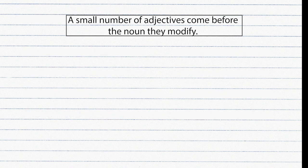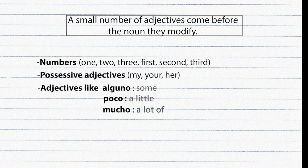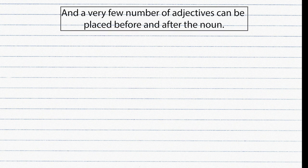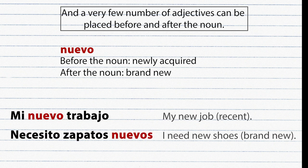Not all adjectives come after the noun. A small number come before the noun they modify — such as numbers, possessive adjectives, and a few others. A very few adjectives can be placed either before or after the noun, and the meaning changes depending on position. For example, 'nuevo': Mi nuevo trabajo vs. Necesito zapatos nuevos.